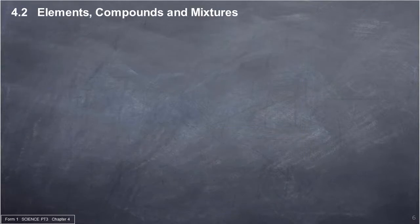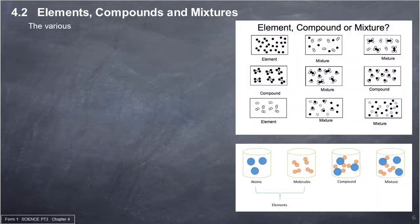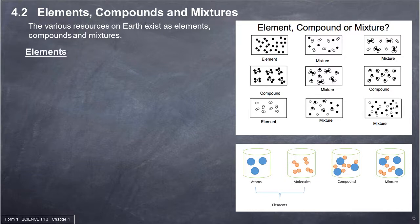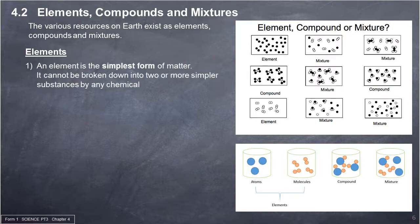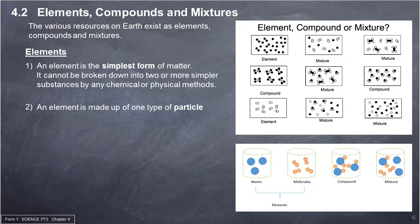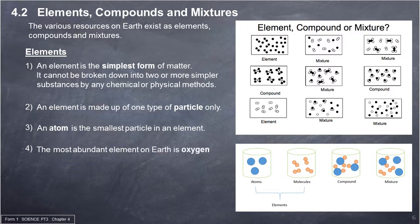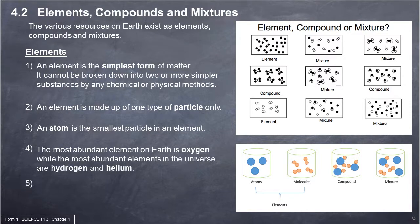4.2 Elements, Compounds and Mixtures. The various resources on Earth exist as elements, compounds and mixtures. An element is the simplest form of matter — it cannot be broken down into two or more simpler substances by any chemical or physical methods. An element is made up of one type of particle only. An atom is the smallest particle in an element. The most abundant element on Earth is oxygen, while the most abundant elements in the universe are hydrogen and helium. Elements may be solids, liquids or gases at room temperature.